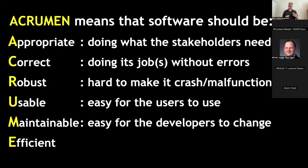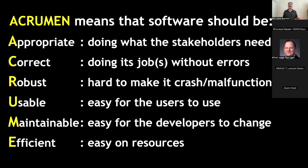It should also be easy for the developers to change, with low chance of error and low fear of error. And last — dead last — despite how we developers tended to absolutely worship this just a few short decades ago, it should go easy on resources: both the technical ones we usually think of, like the central processing unit and the memory, but also soft resources like the user's patience and brain power, and the company's money.